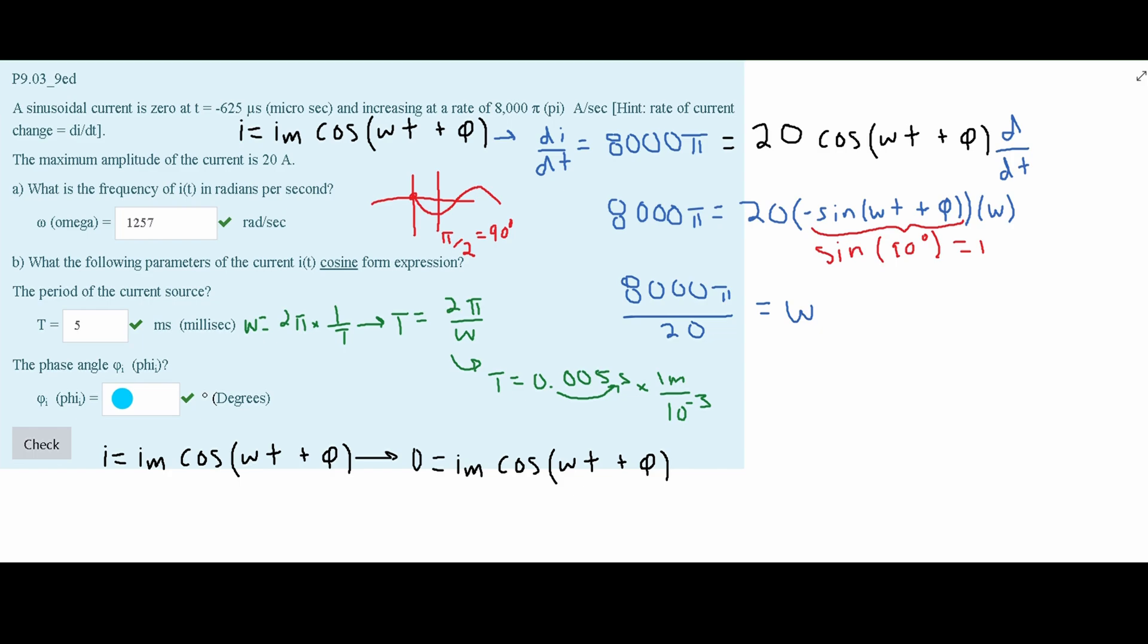And we have our cosine. We're going to leave our i max, our cosine, and our omega. What we are going to replace here is the time now. And it's going to be negative 625 times 10 to the negative 6. That is our new time. So what we can do here is divide both sides by this i of m. So it's just going to be 0 is equal to everything inside of our cosine.